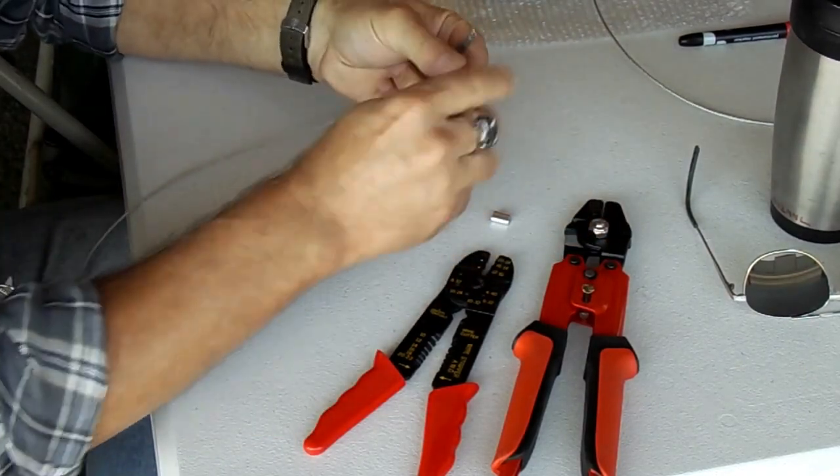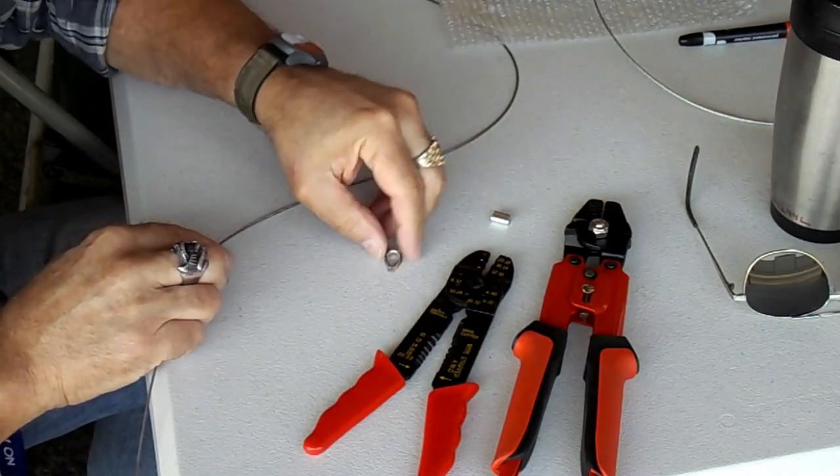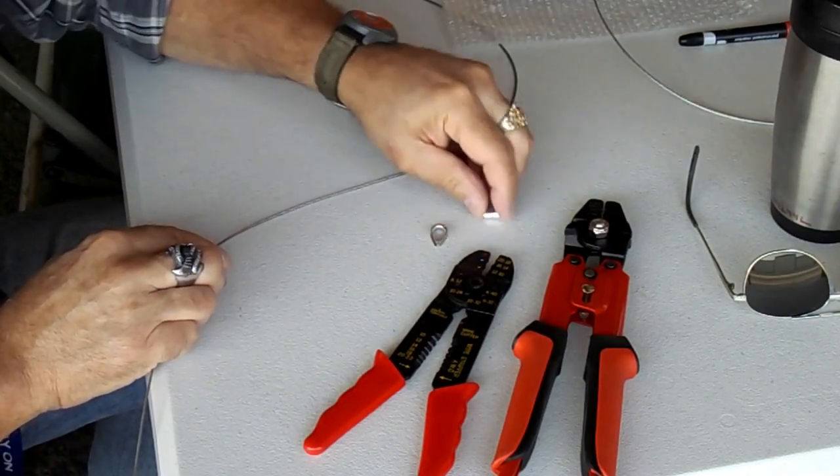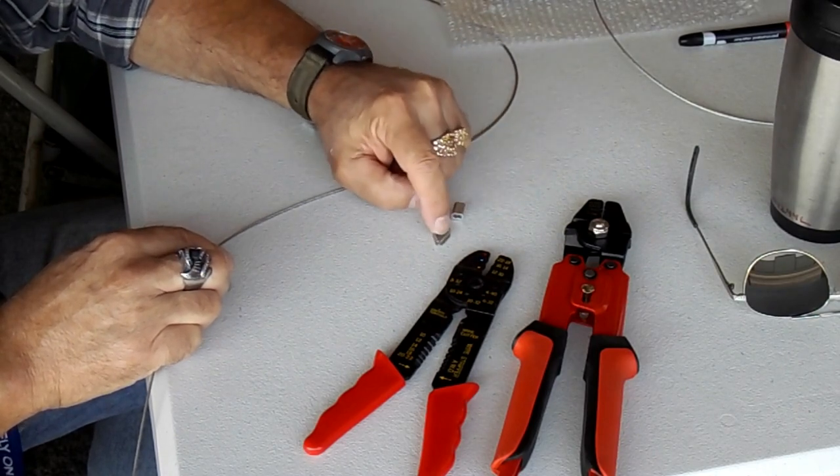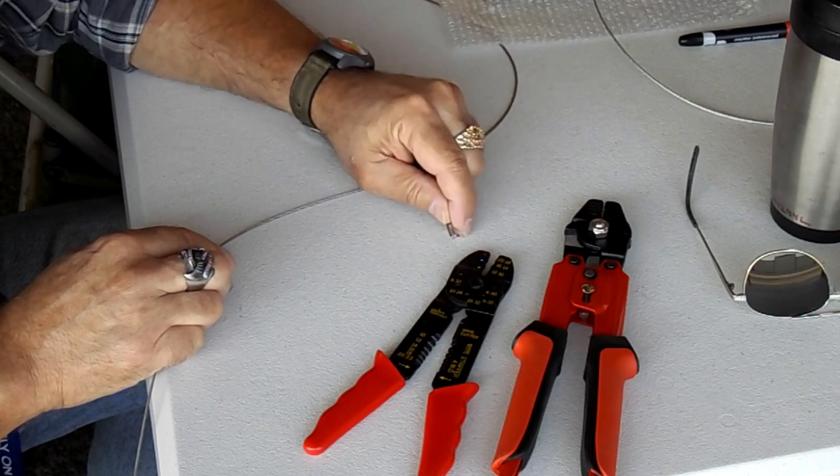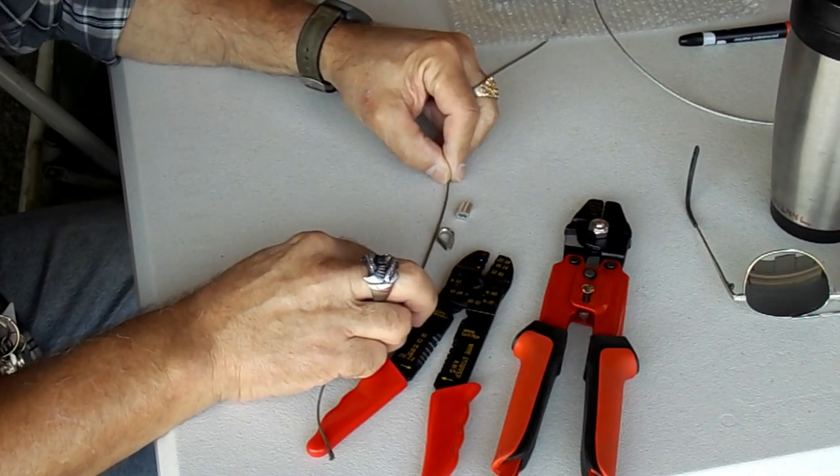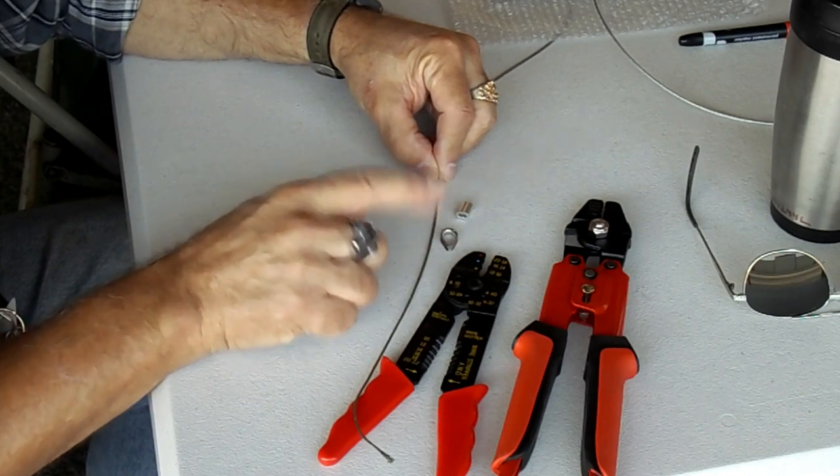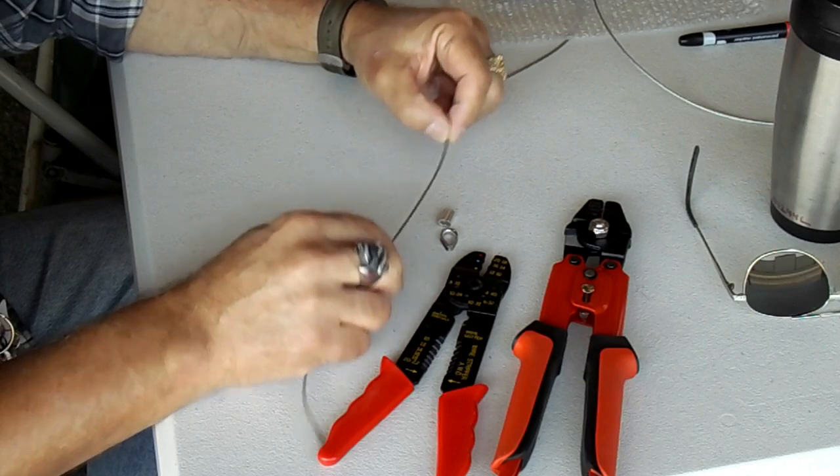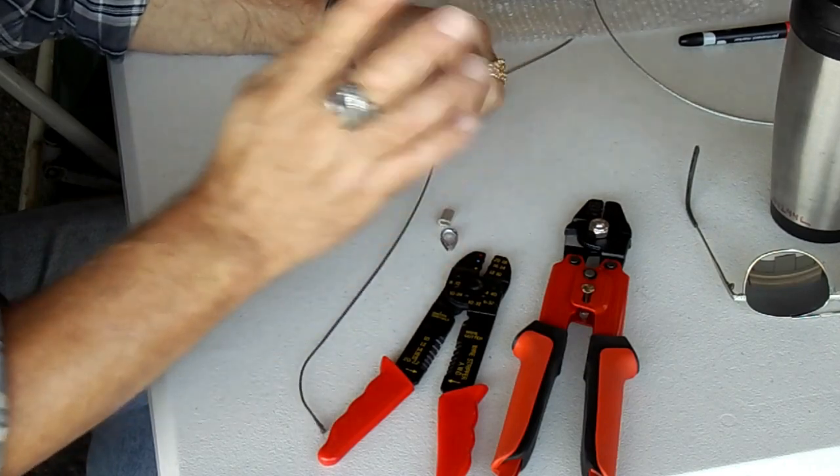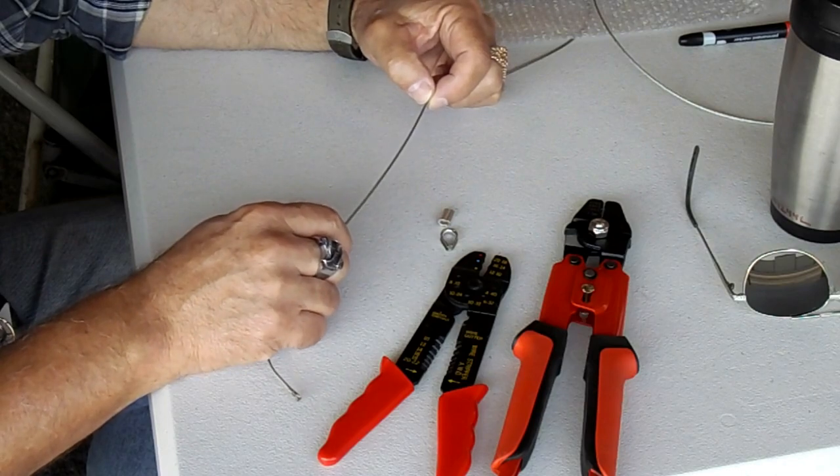They're held in place by a thimble, which is this thing here. It's called a thimble and this is a sleeve. Unfortunately I don't have any 1/16 inch thimbles, so all I have is 1/8 inch. This is 1/16 inch cable. This cable is going to be a little undersized for these, but I'm just going to do this for demonstration purposes and just sacrifice these two guys.